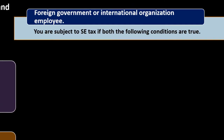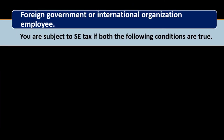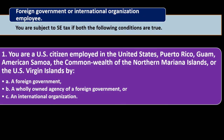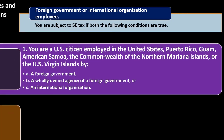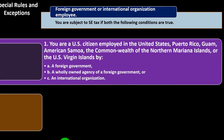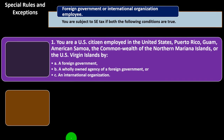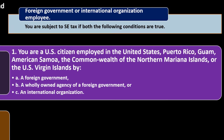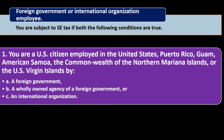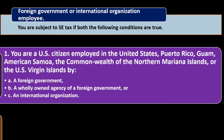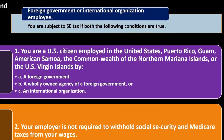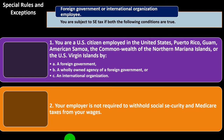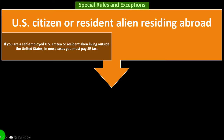Foreign government or international organization employee: you are subject to self-employment tax if both the following conditions are true. One, you are a U.S. citizen employed in the United States, Puerto Rico, Guam, American Samoa, or the U.S. Virgin Islands by a foreign government, a wholly owned agency of a foreign government, or an international organization. And two, your employer is not required to withhold Social Security and Medicare taxes from your wages.